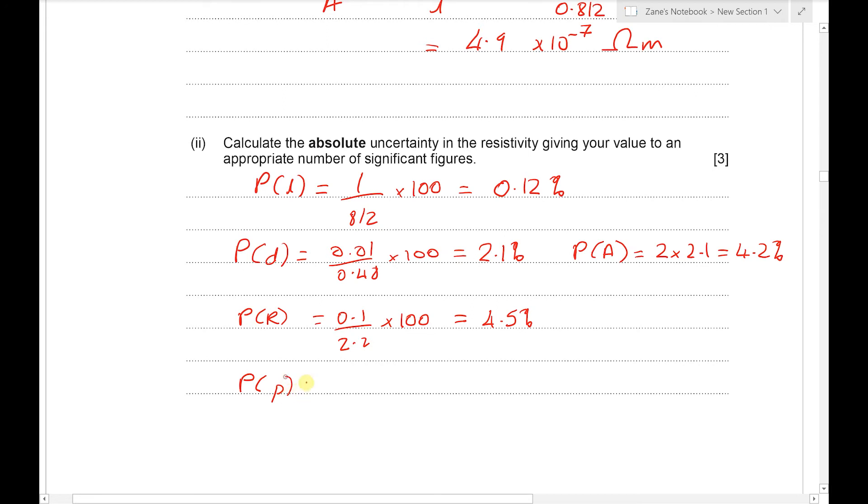Next we need to find the total percentage uncertainty in the resistivity by adding all those individual percentages up. Now we'll note this year there wasn't actually any point going to that second decimal place with the length because the other uncertainties are to just the first decimal place. So what we're going to do is we're going to add together 0.1, 2.1, sorry 4.2 and 4.5.